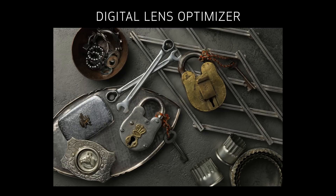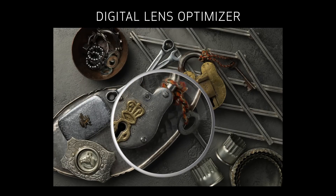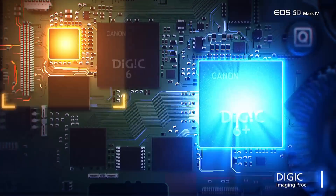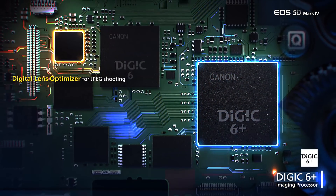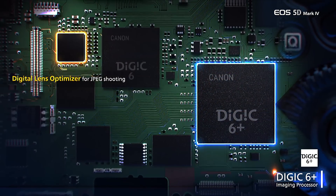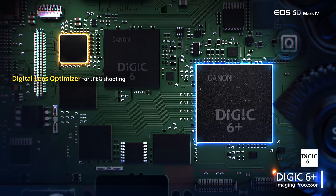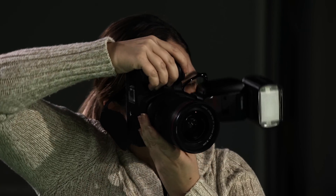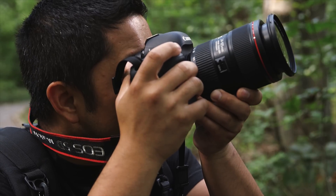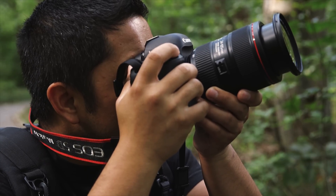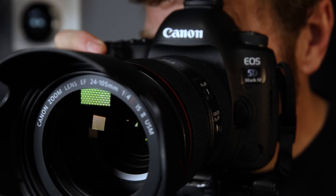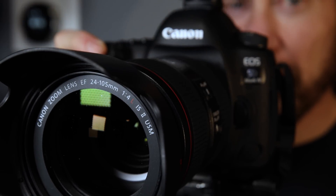Think of it as a very smart form of sharpening, using target data from Canon's lens engineers. There's a considerable amount of processing involved, so if you have DLO active, your shooting speed and burst rate will slow down noticeably. But for JPEG shooters, or RAW shooters who will either process the occasional RAW file in-camera, as well as those who use Canon software, there are sharpness and detail benefits worth considering.